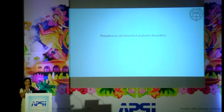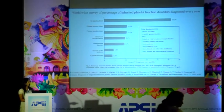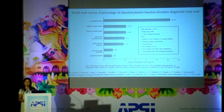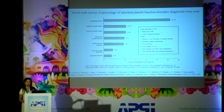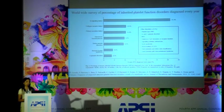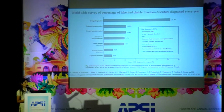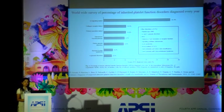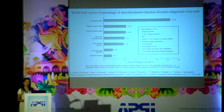Coming to prevalence of inherited bleeding platelet disorders — I have both Western data and CMC data. This is a worldwide survey done to determine the percentage of inherited platelet disorders, published in the Journal of Thrombosis and Haemostasis in 2014. In this study, 37 countries participated, with majority from UK, US, Canada, and Australia. The G1 signaling defect was the most common at 31.3%. The collagen receptor defect and primary secretion defect was 10.4%. Of interest, the severe forms — Glanzmann thrombasthenia and Bernard-Soulier syndrome — were actually less common.